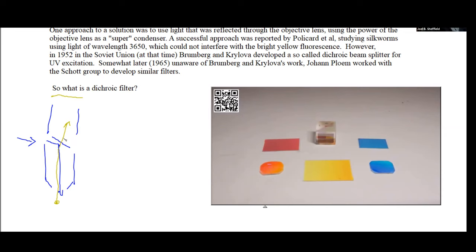In the 1950s, in 1952, it was published in the Soviet Union by Rumberg and Krilova. They developed what is now known as a dichroic filter. But because it was 1952, the information never got out of the Soviet Union. Quite a bit later, a man by the name of Johann Plum developed the same system, basically, in which he started working with the Schott group from Zeiss to make these filters. As it turns out, the device he made was actually marketed initially by another microscope company, Leica, who were able to capture what he had in mind. Let me show you an example of how a dichroic filter works.